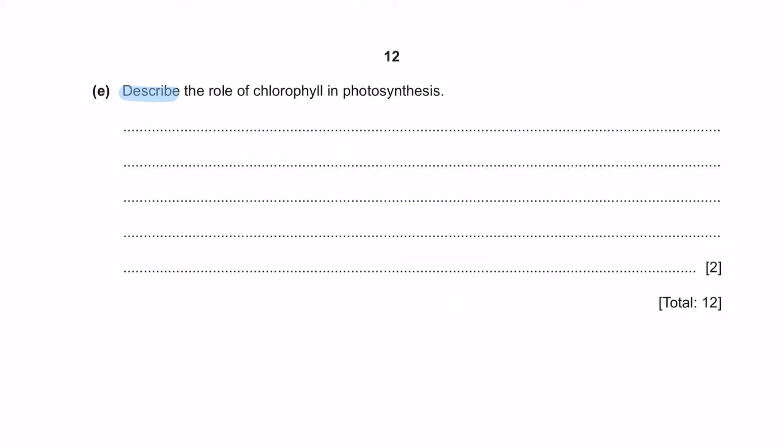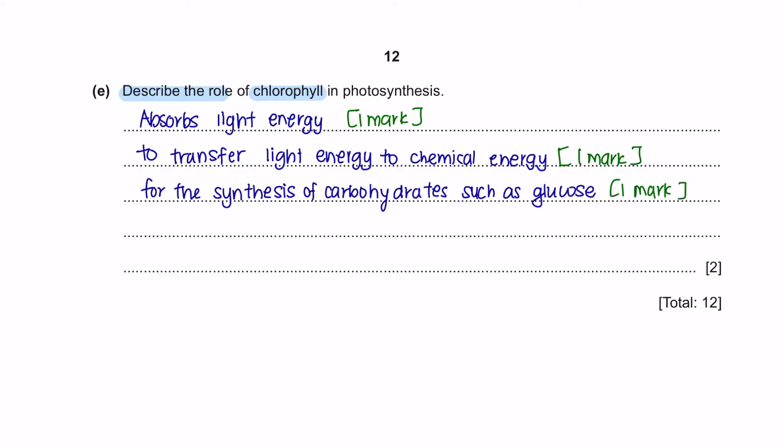Question E. Describe the role of chlorophyll in photosynthesis. Chlorophyll is a green pigment that is found in chloroplasts within plant cells. The role of chlorophyll is to absorb light energy and transfer this energy into chemical energy for the synthesis of carbohydrates such as glucose.